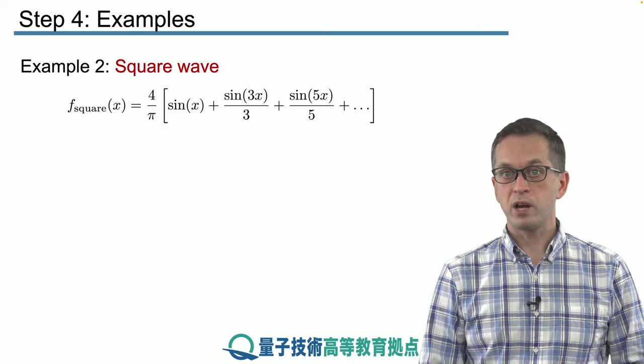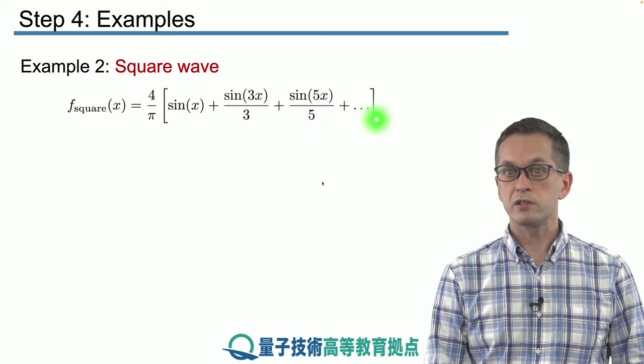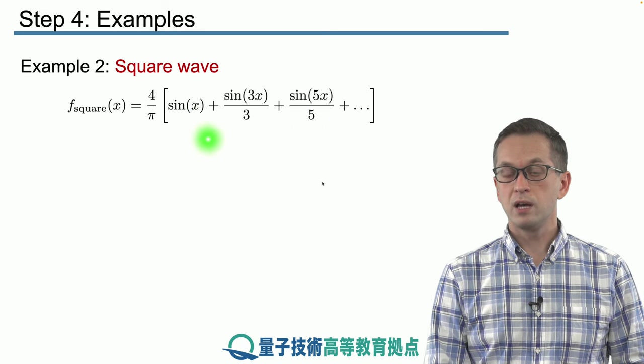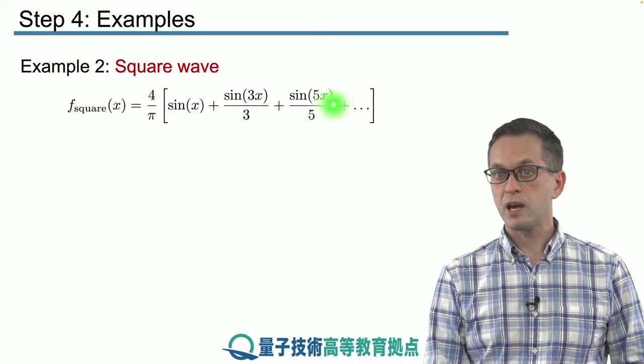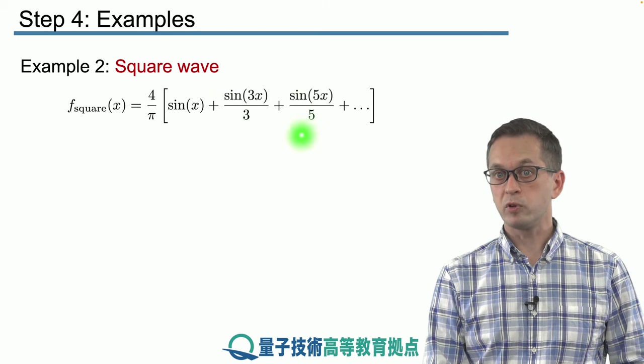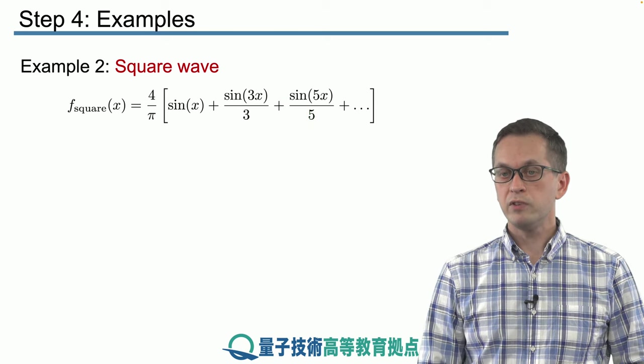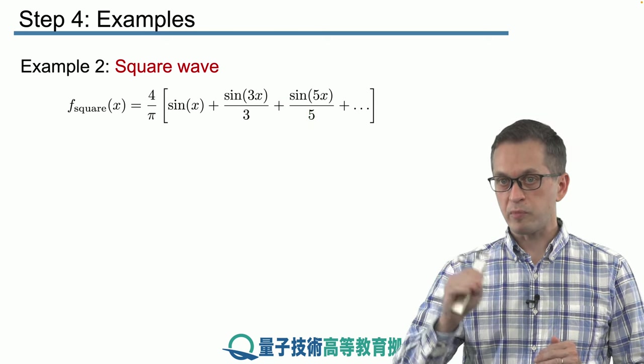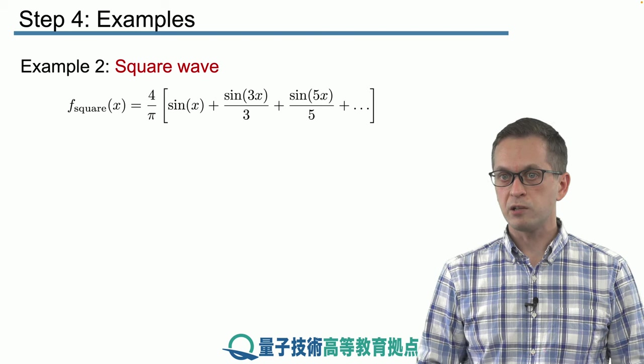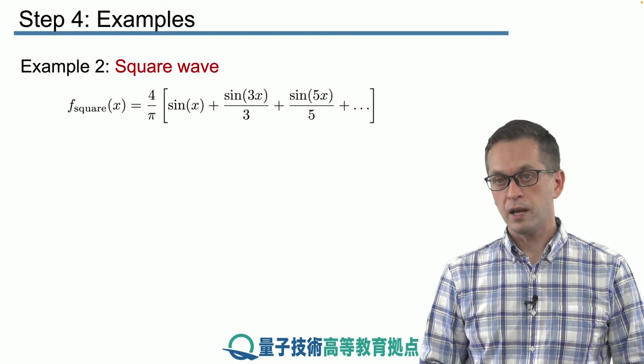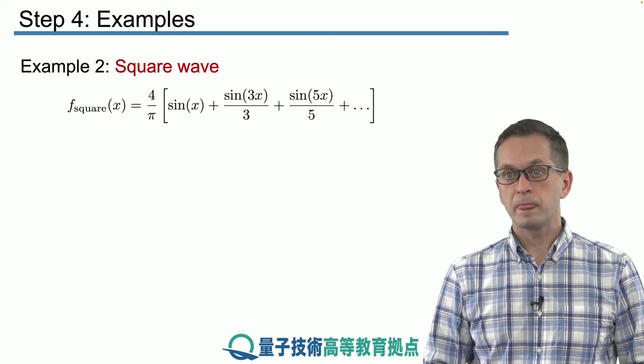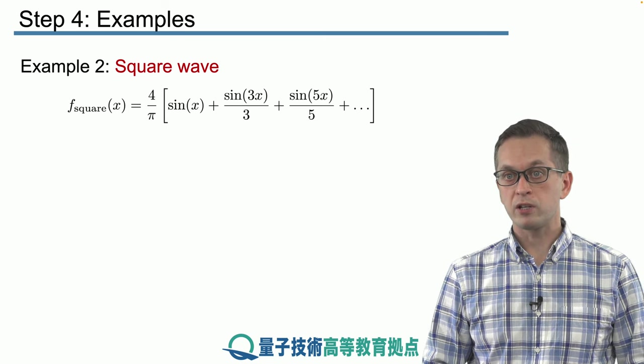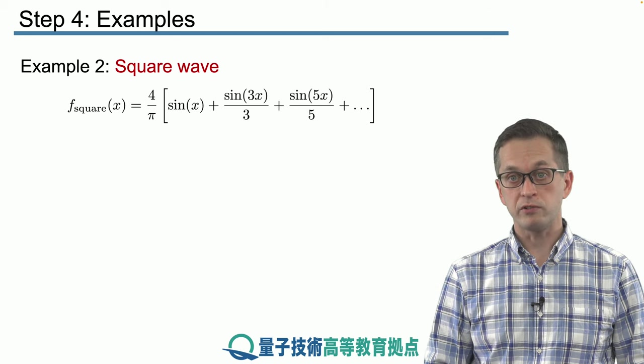So there we have it. This is the Fourier series for our square wave function. Unlike in the case of the delta function, here we see that each higher harmonic is being rescaled by its corresponding n. So even though this function also has a step, its behavior is not as singular as the Dirac delta function. And the higher harmonics are a little bit less important in terms of reproducing the square wave function.